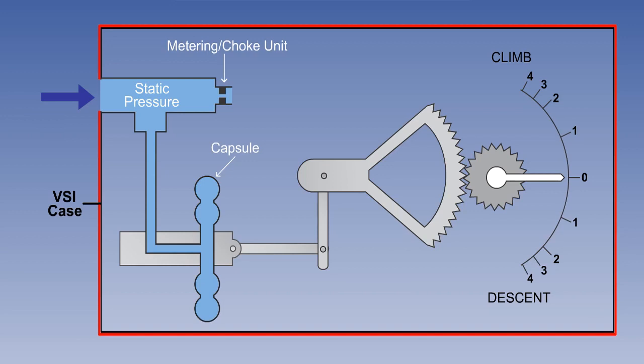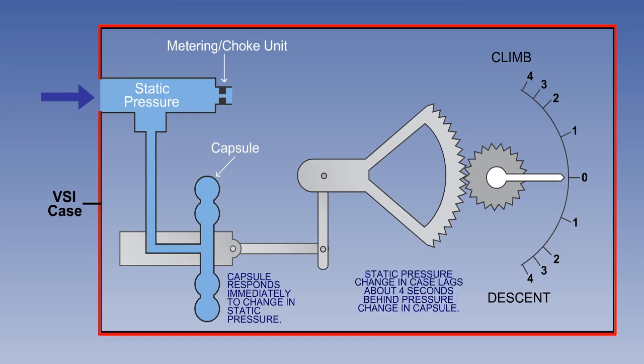In level flight, the static air pressures on each side of the choke will be equal. However, the static pressure will change as altitude changes. Any change will be sensed immediately by the capsule, but the static pressure change in the instrument case will be much slower because of the restrictive choke. This causes a pressure differential which will be maintained while the aircraft is climbing or descending. Also, the rate at which the altitude is changing will be reflected by the size of the pressure differential. Once the aircraft is in level flight, the pressures will equalize after a few seconds, and the VSI reading will return to zero.